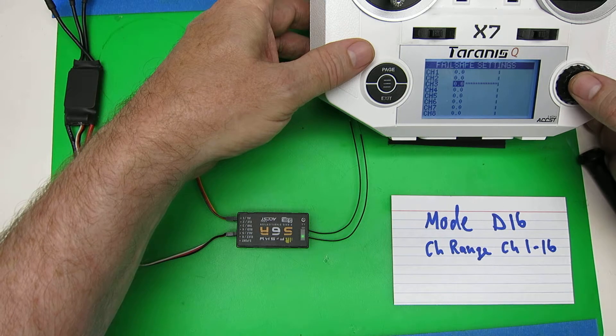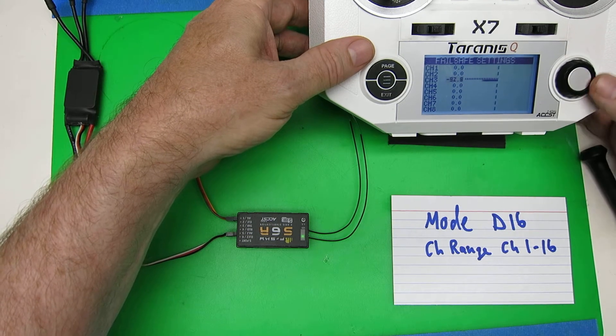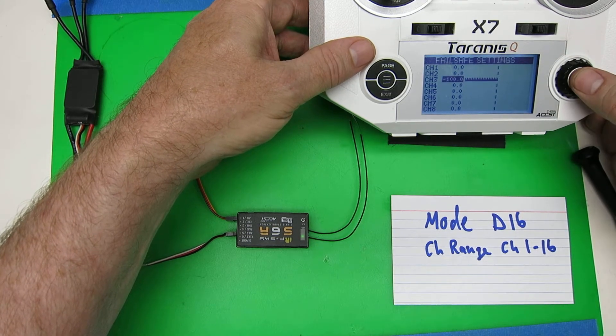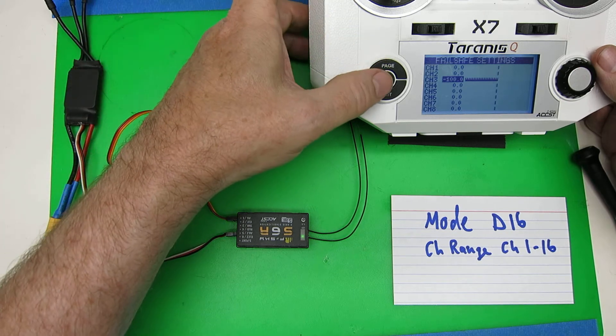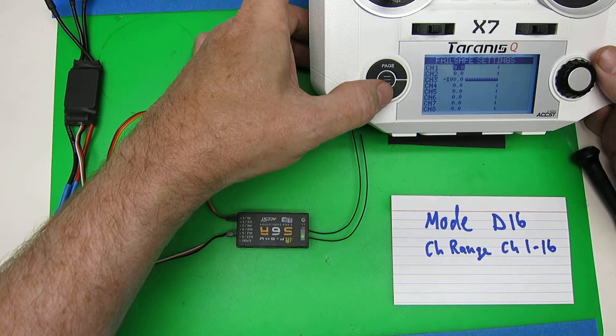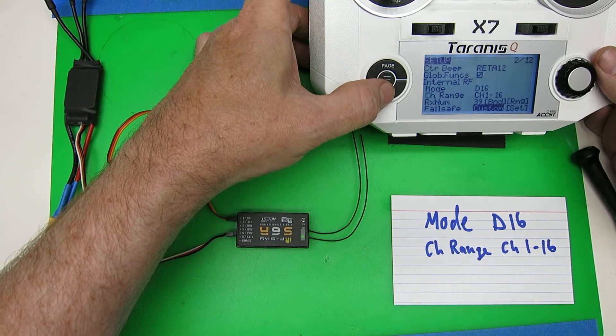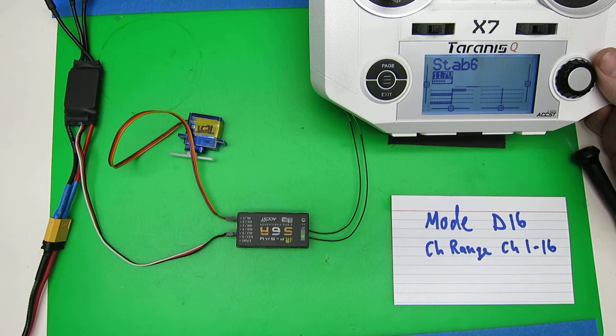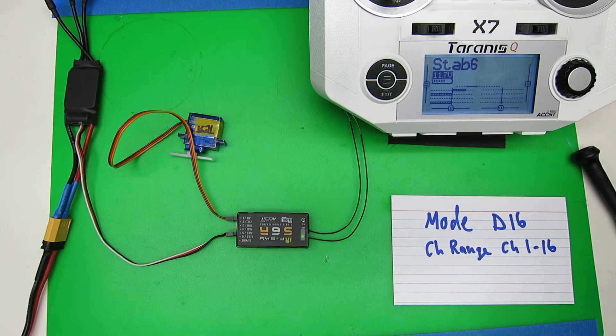And let's set channel 3, the throttle, down to minus 100. So if something goes wrong later, we'll make sure that the motor turns off. And we're ready to go to the next step.